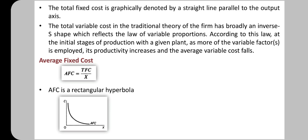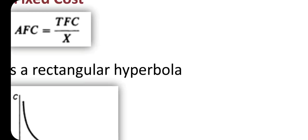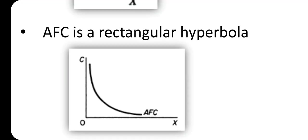So total cost equals total fixed cost plus total variable cost. Now coming to average fixed cost, AFC. Average fixed cost is total fixed cost divided by the number of units of output produced — that is TFC divided by X.